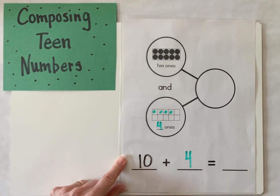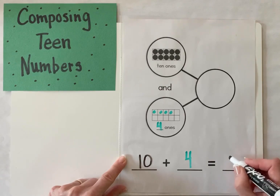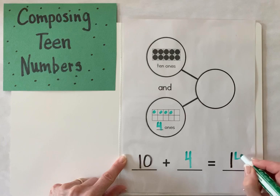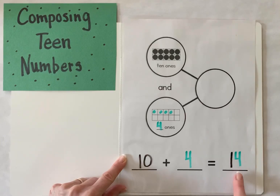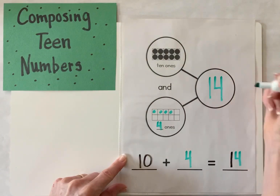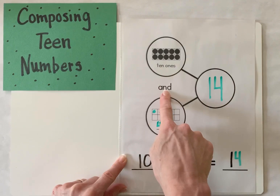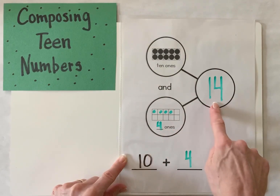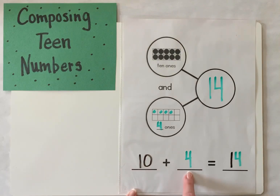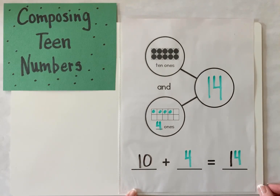So what teen number does that make? Our 10 ones and our four ones equals 14. And we can write that number up here in our big circle: 10 ones and four ones equals 14, or 10 plus 4 equals 14. And that's how we compose a teen number using a number bond.